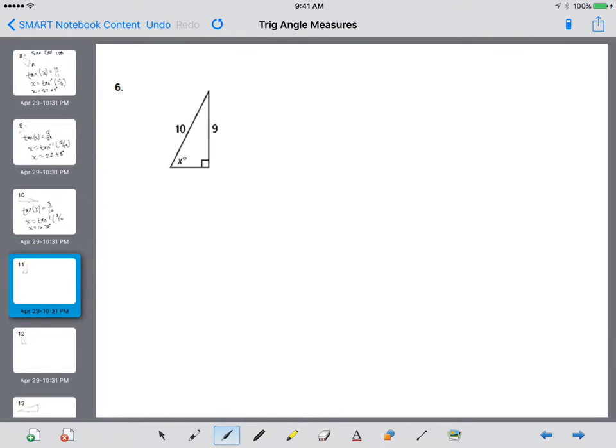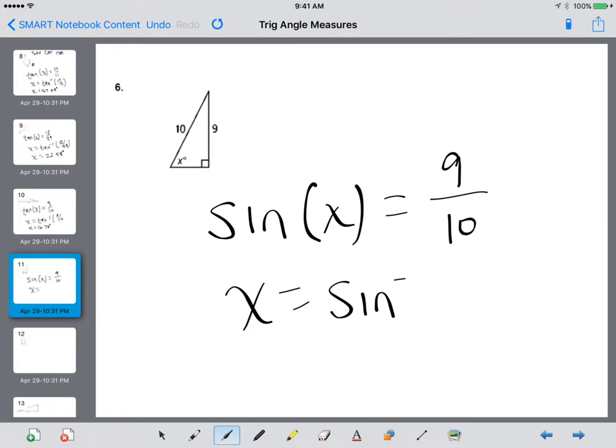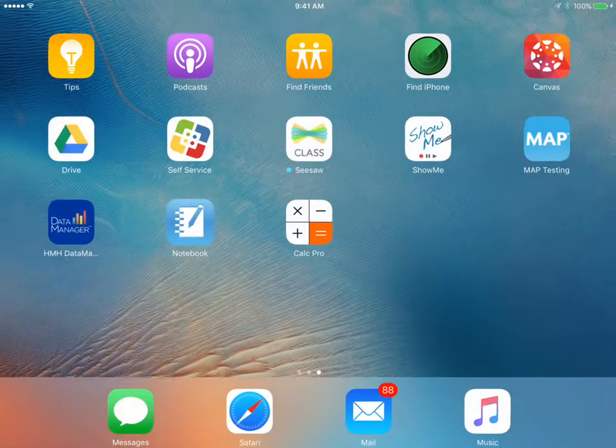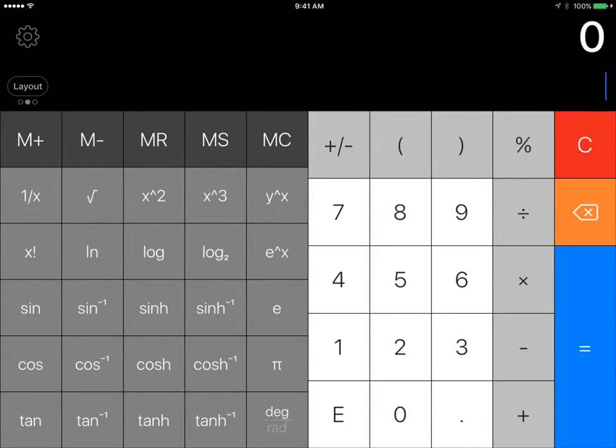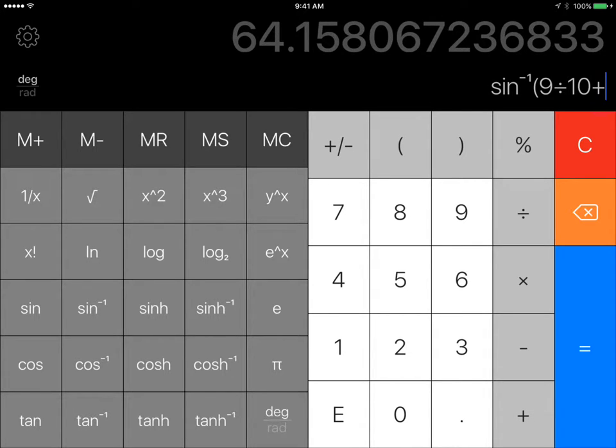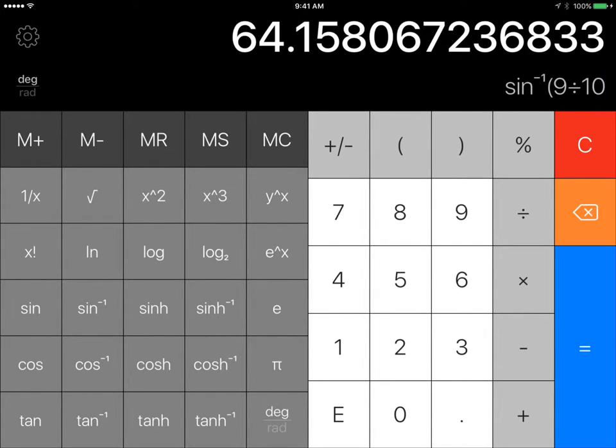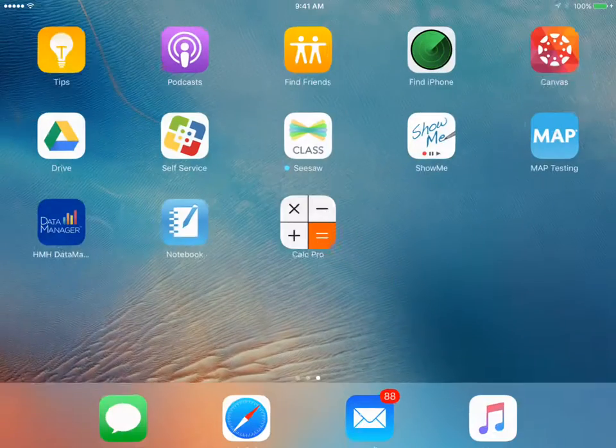A couple more here. This looks like we're going to have sin of x equals 9 over 10. Sin inverse of 9 divided by 10. 64.158. So we'll go 64.16.